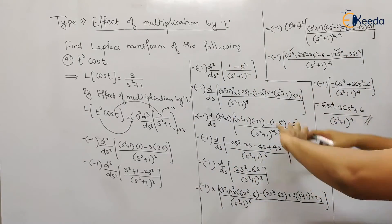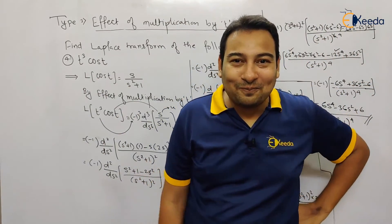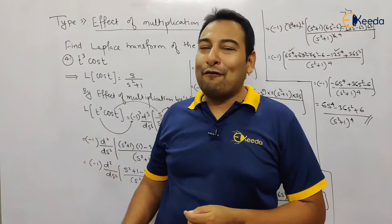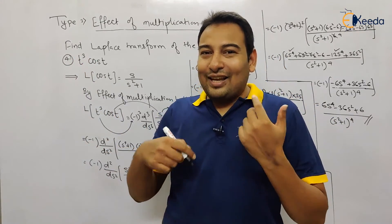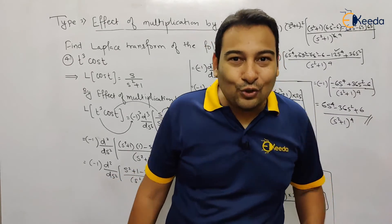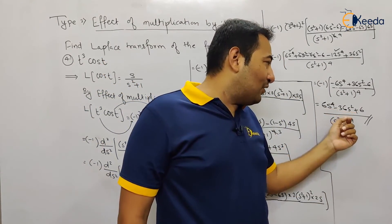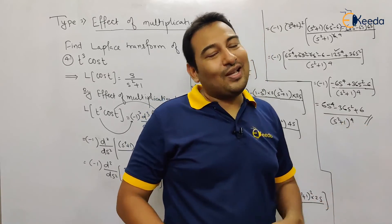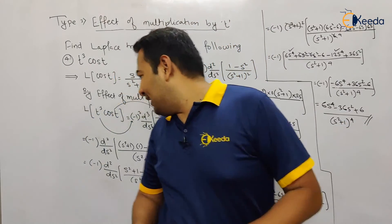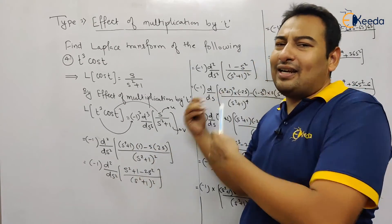This problem may come in an exam for 6 marks. To make it an 8-mark problem, just add a first shift property — for example, multiply by e^(−2t). The only difference to the solution is that every s gets replaced by (s+2) throughout. Hope this is clear — we're done. Laplace is done here; after that it's all differentiation. Thank you.